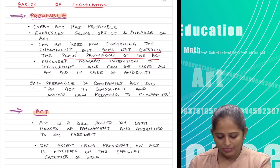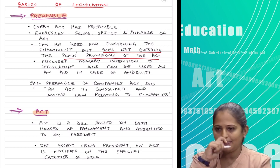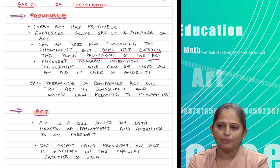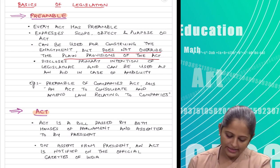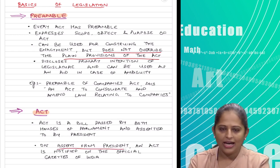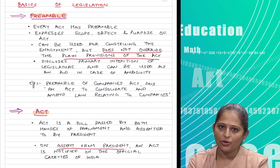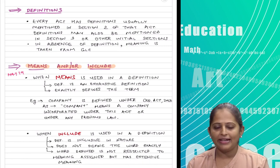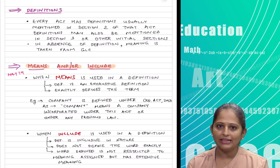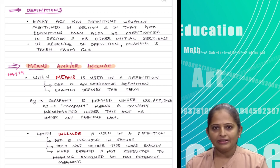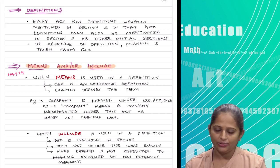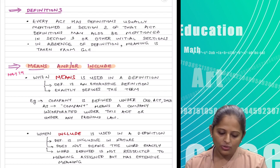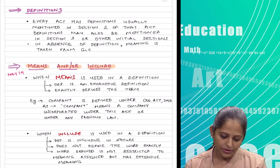An act is basically a law which has been passed and approved by the Parliament of India and which has received its assent from the President of India. Till the time a bill is not approved, it does not come into force. Definitions are something you will find in section 2 of almost every act — they give you the definitions of words used in the act, and if there is any ambiguity you can refer to the definition.